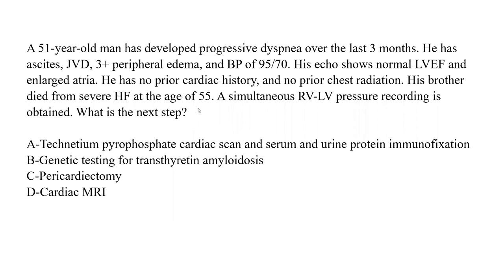This is a 51-year-old man, a patient I had here in Iowa a few months ago. He developed progressive dyspnea. He also has ascites, JVD, 3-plus peripheral edema, a low blood pressure and pulse pressure. His echo shows normal EF and enlarged left atria. No prior cardiac history, no prior chest radiation. His brother had severe heart failure and died at the age of 55.